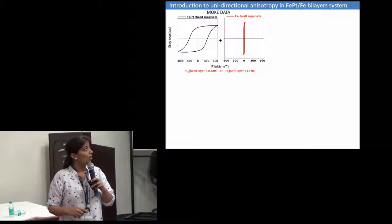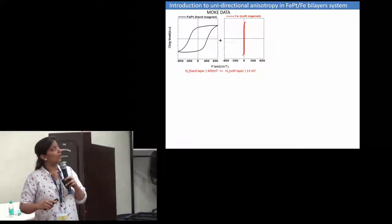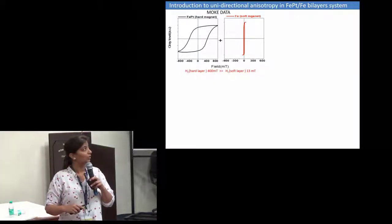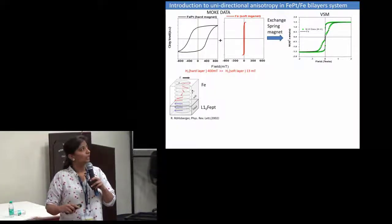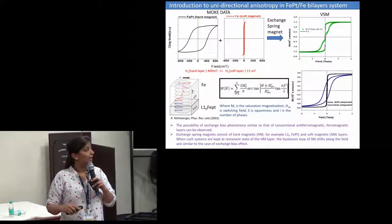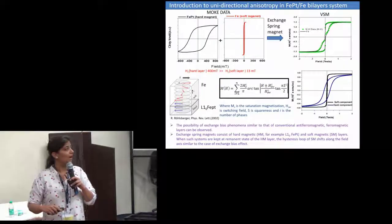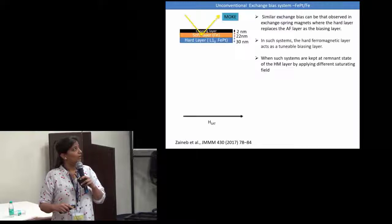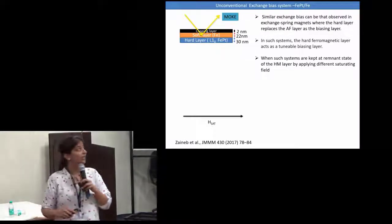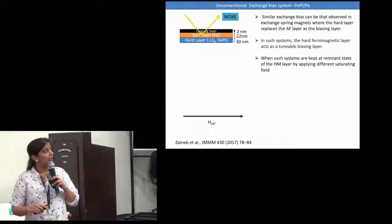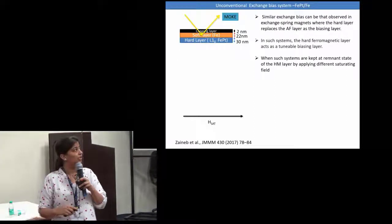Now I would like to introduce the uniaxial anisotropy in the FePt bilayer system. It has a combination of a hard layer — the FePt — and a soft layer. When these two layers are combined in a bilayer form, it is called an exchange spring magnet, having both a soft and a hard component. The soft component is coupled with the hard layer. There is a similar possibility of exchange bias in a soft and hard layer, where the hard layer replaces the antiferromagnetic layer, and in such a system the hard layer acts as a tunable exchange bias layer.